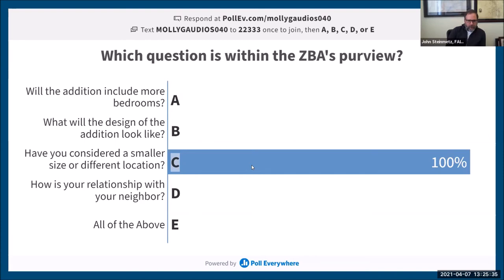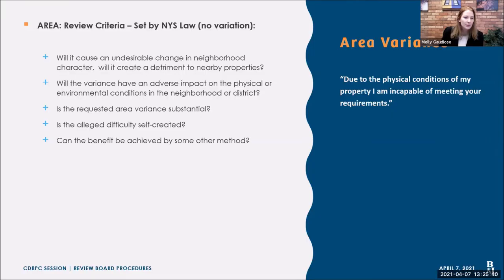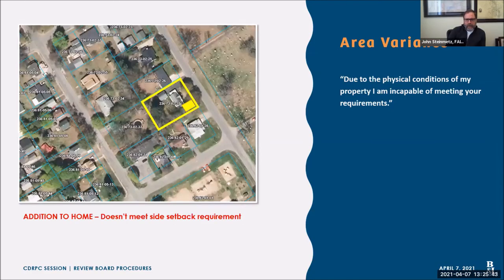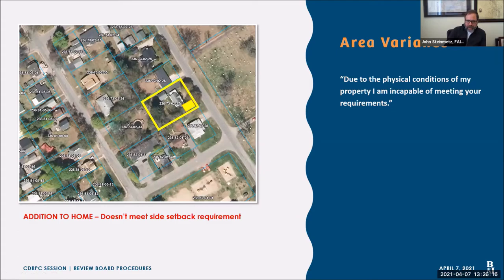That is the correct answer. Glenn had a question about self-created hardship. I picked this example for a reason — in my opinion, it would be very easy, given the amount of backyard and side yard this property has, to slide that addition to the back. Maybe you don't need a front yard variance, maybe only a side yard variance. There's enough property to do that same addition in a different orientation where it wouldn't need any variances. This is clearly a self-created hardship, given the size of the lot and the other opportunities available.